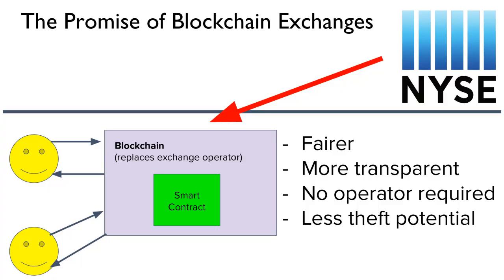One of the systems set to be revolutionized by this style of agreement is exchanges. Traditionally, when parties wish to exchange assets, they go to a centralized clearing house such as the New York Stock Exchange that promises to execute their trades in order and fairly. Using a blockchain, you can replace this centralized operator with a smart contract or program that executes on the blockchain. This promises to be fairer and more transparent, with no centralized third-party operator required and less potential for such operators to abscond with user funds.